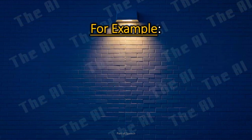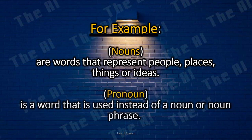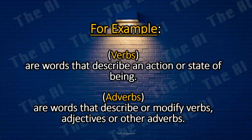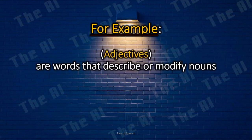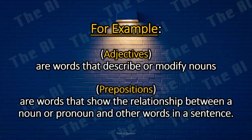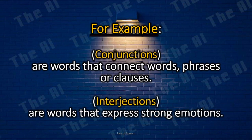For example, nouns are words that represent people, places, things, or ideas. A pronoun is a word that is used instead of a noun or noun phrase. Verbs are words that describe an action or state of being. Adverbs are words that describe or modify verbs, adjectives, or other adverbs. Adjectives are words that describe or modify nouns. Prepositions are words that show the relationship between a noun or pronoun and other words in a sentence. Conjunctions are words that connect words, phrases, or clauses. Interjections are words that express strong emotions.